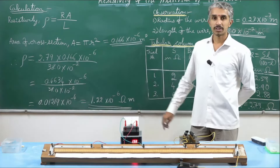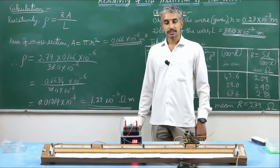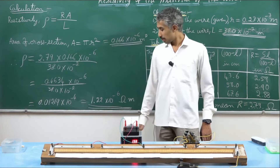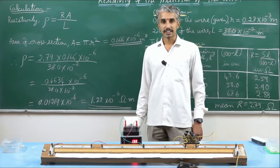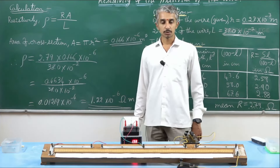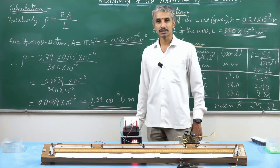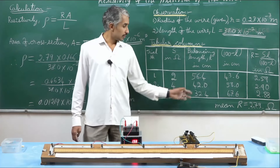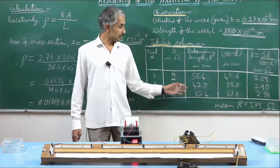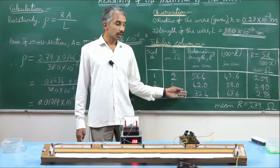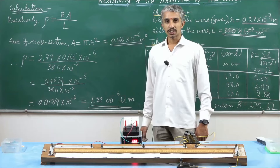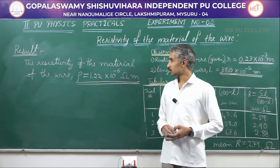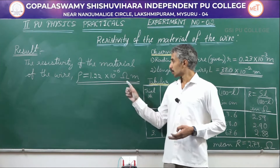The experiment is complete. The result: resistivity of the material of the wire = 1.22 × 10⁻⁶ ohm meter. The standard value for nichrome wire is nearly 1.1 micro ohm meter. Small variations from the actual value are acceptable in laboratory experiments due to apparatus errors, provided the values are verified by the lecturer present.